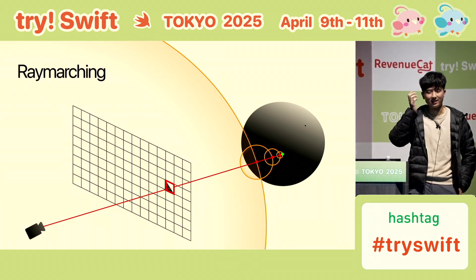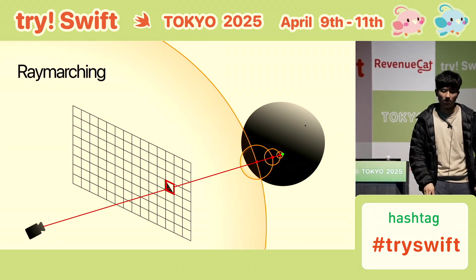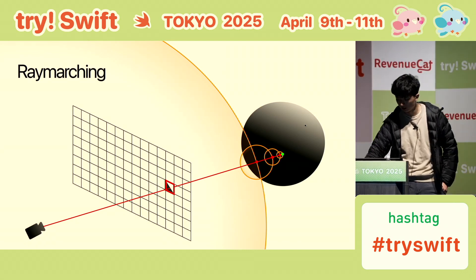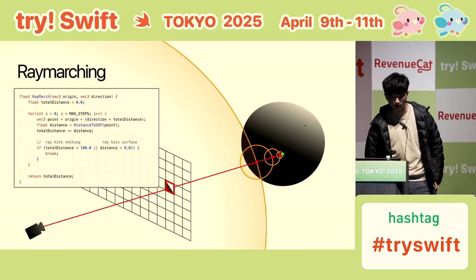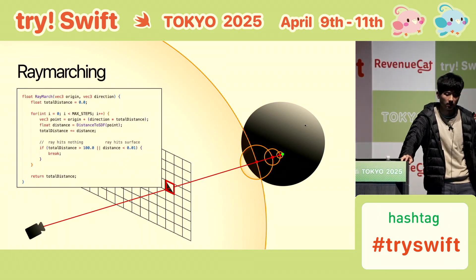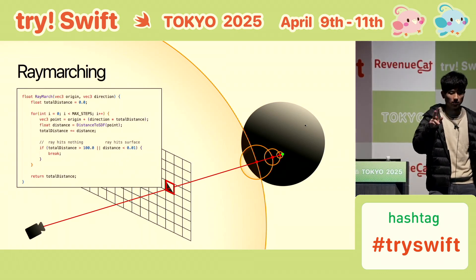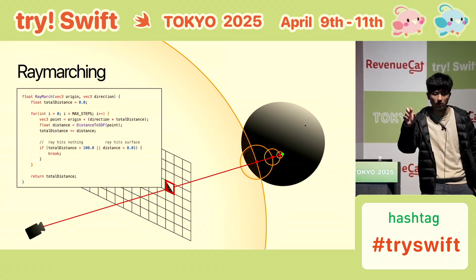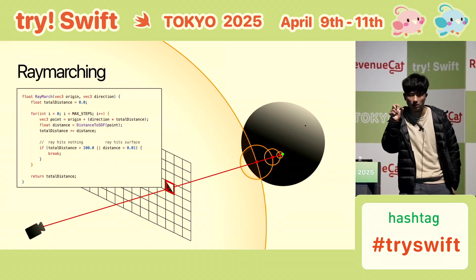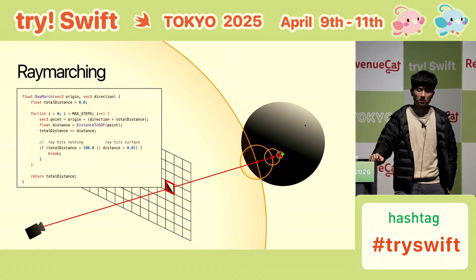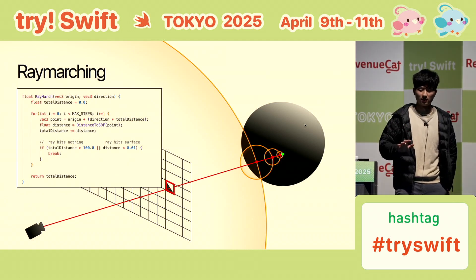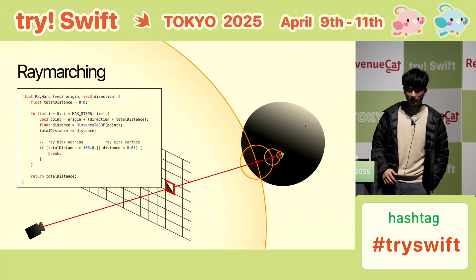Ray marching is basically hit-testing — it finds the distance to the sphere. The code has a big loop that accumulates steps until the distance is small enough to be a contact. I'm glossing over some details, but that's ray marching.